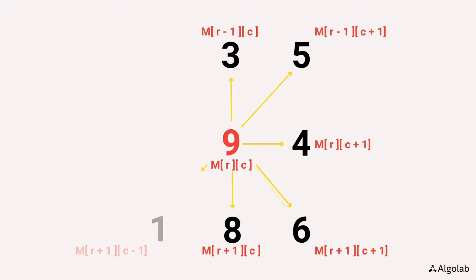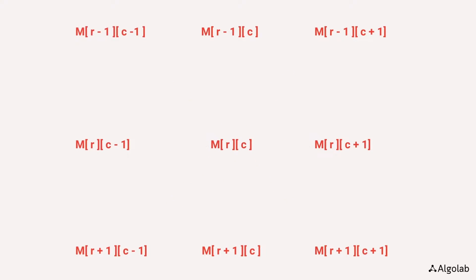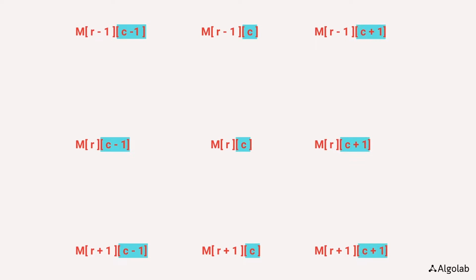In general, for any row r, r-1 is the index of its upper row and r+1 is the index of its lower row. Similarly, for column c, c-1 is the index of its left column and c+1 is the index of its right column.